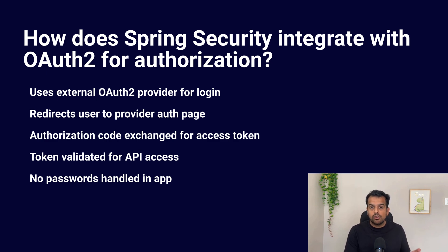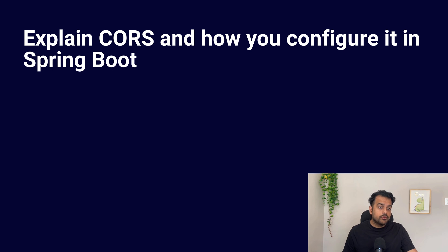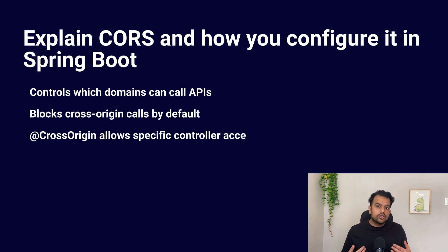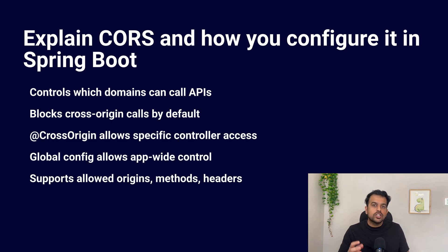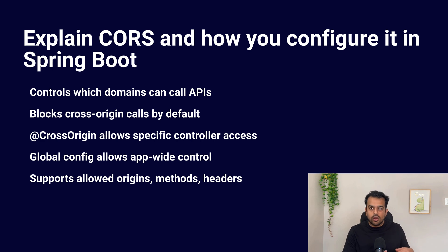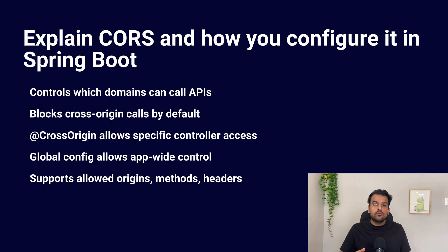The next question is: explain Cross-Origin Resource Sharing (CORS) and how you would configure it in a Spring Boot application. This question is not for beginners but it is good to know. CORS is all about which front-end domains are allowed to call your backend API. By default, the browser blocks calls from one origin to another if CORS is not configured properly.